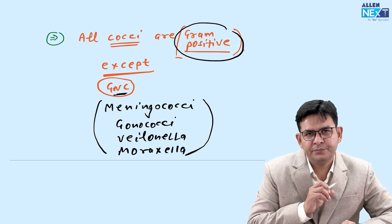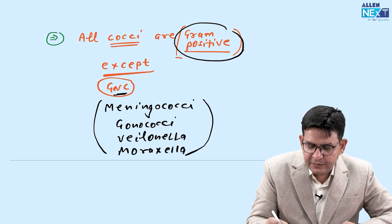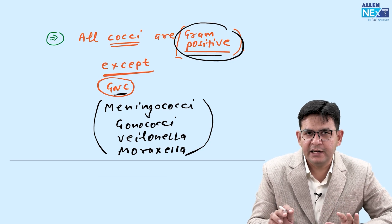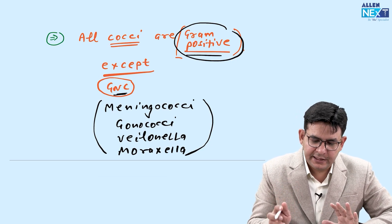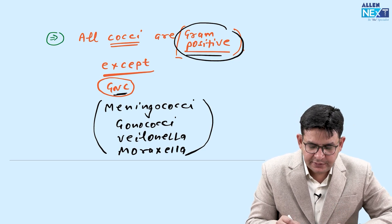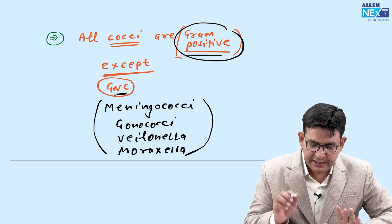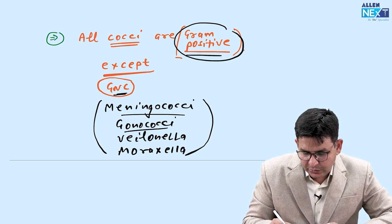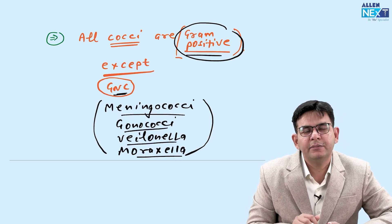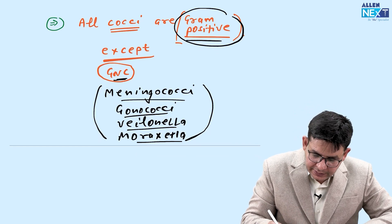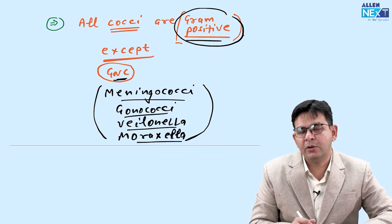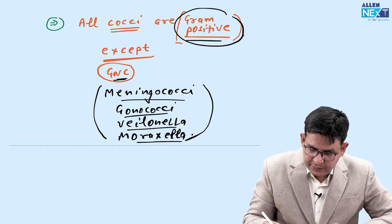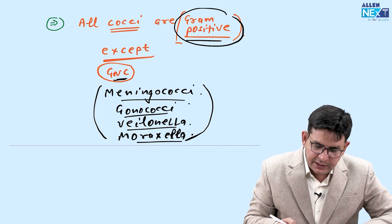These four are gram-negative cocci, and all the rest are gram-positive. Most cocci are gram-positive except gram-negative cocci: Meningococci, Gonococci, Veillonella, and Moraxella. This will help avoid a lot of confusion for a very long time.